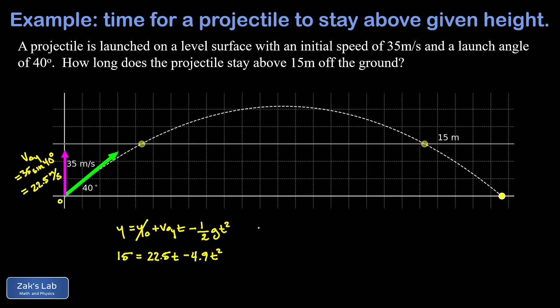Before we solve this quadratic equation, I prefer to have a positive coefficient on the quadratic term. So I'm going to move all the terms to the left hand side of the equation. That gives me positive 4.9 t squared minus 22.5 t, and then plus 15 is equal to zero.